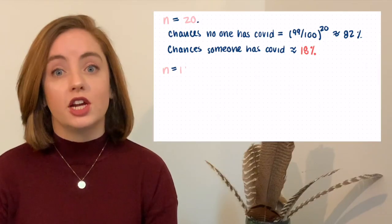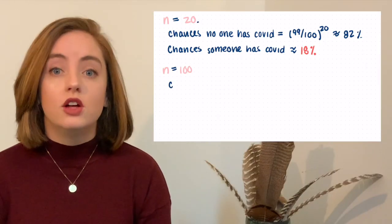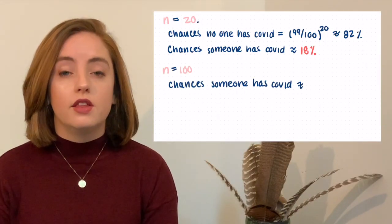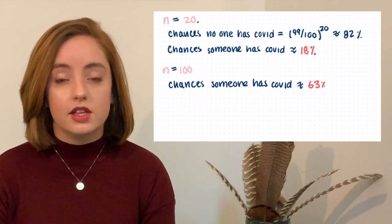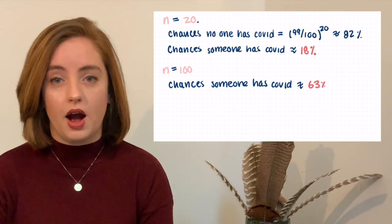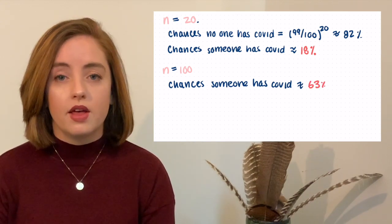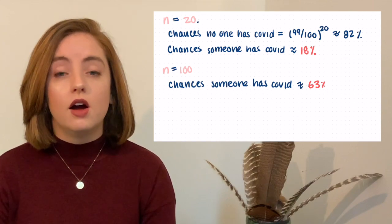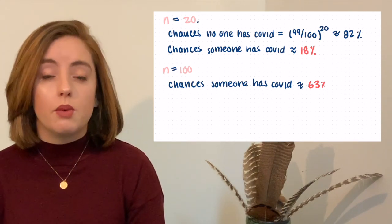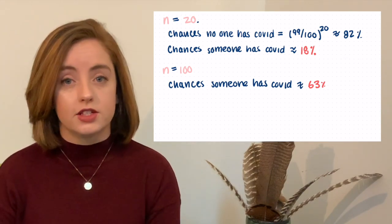Now let's go to Target and there's 100 people there. The chances jump — doing the same calculation, there's a 63% chance that someone there is COVID positive. That means that more likely than not, someone there has COVID.